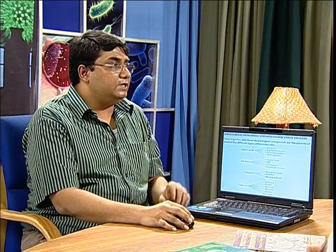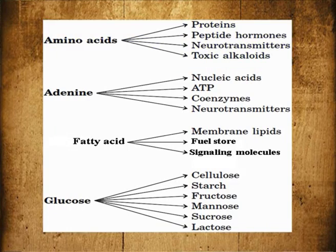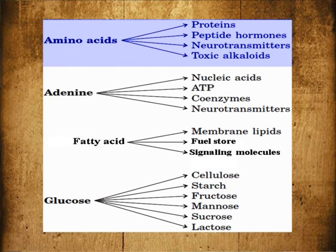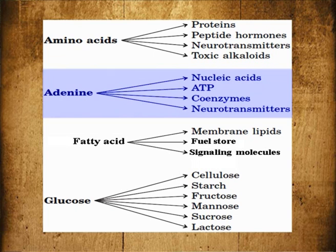Taken together, we can say that only about three dozen organic compounds are the parents of most of the different types of biomolecules. Amino acids can be used to generate proteins, peptide hormones, neurotransmitters, toxic alkaloids, etc. Adenine leads to nucleic acids, ATP, coenzymes, neurotransmitters and so on. Fatty acids can be used to form membrane lipids, they can act as fuel stores and also as signalling molecules.